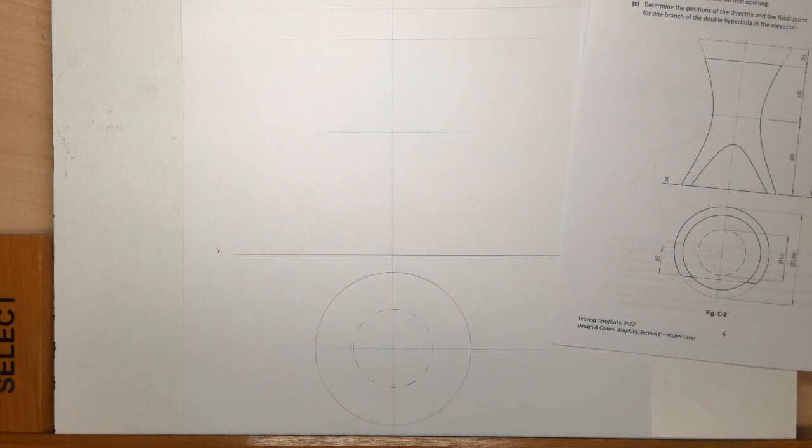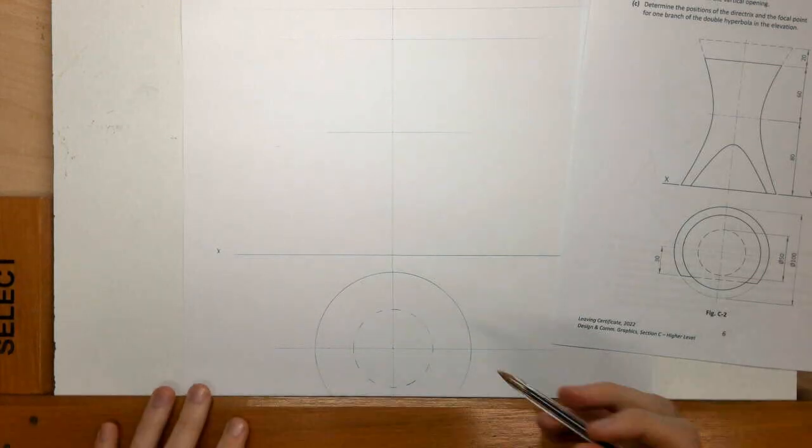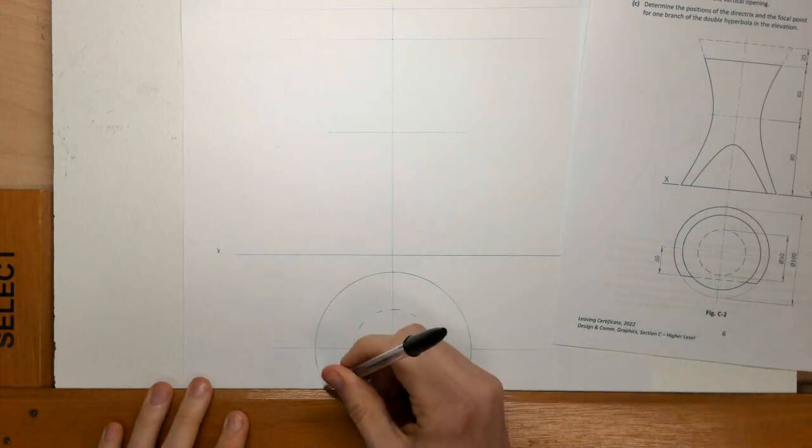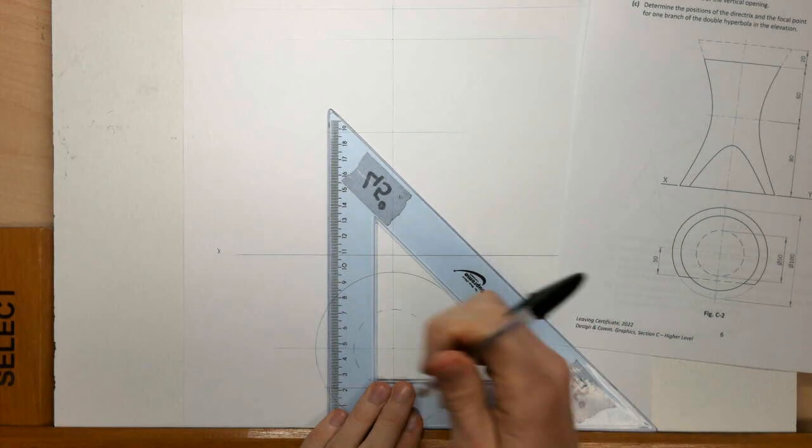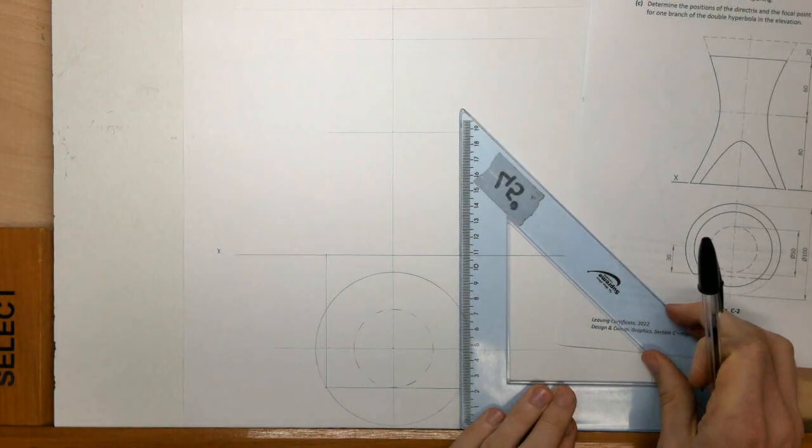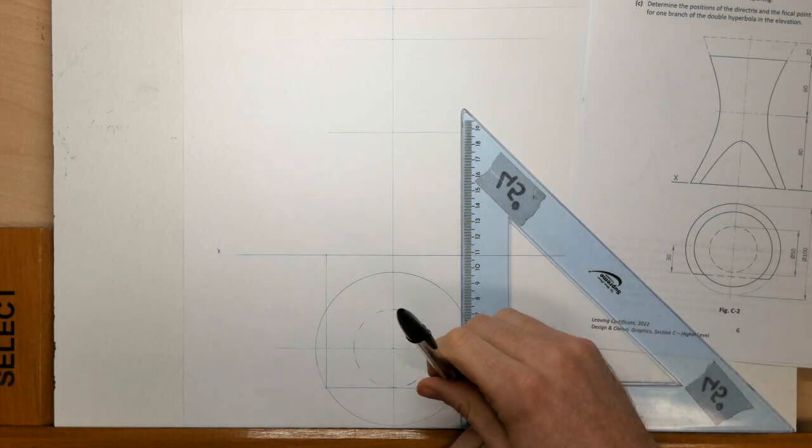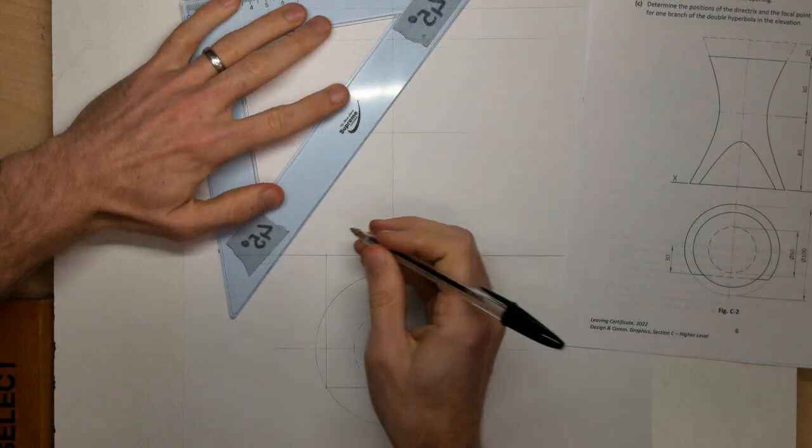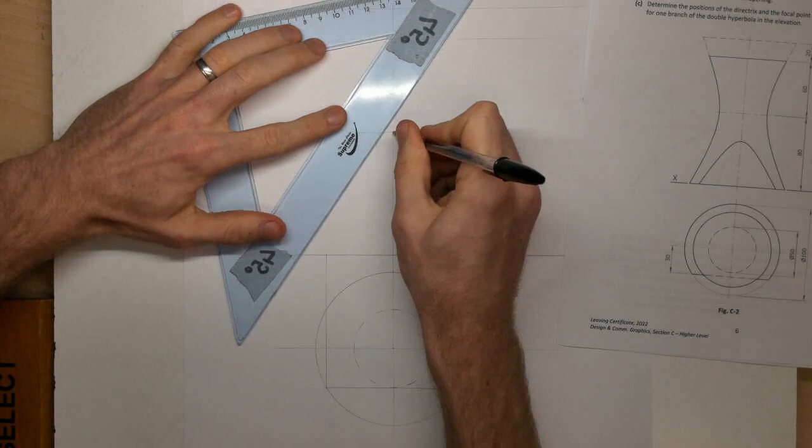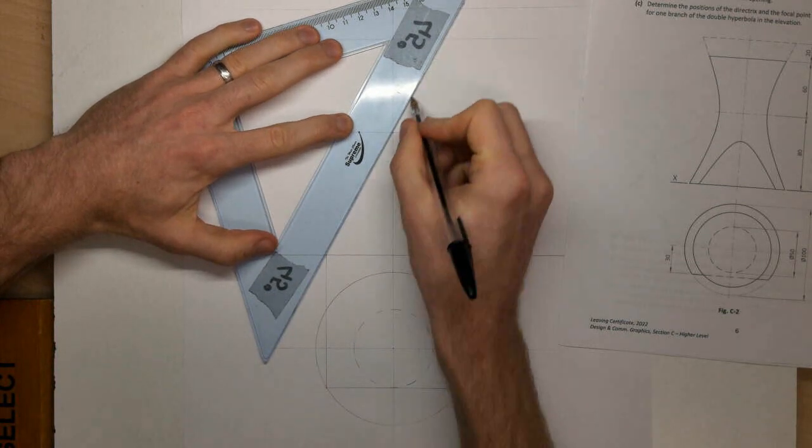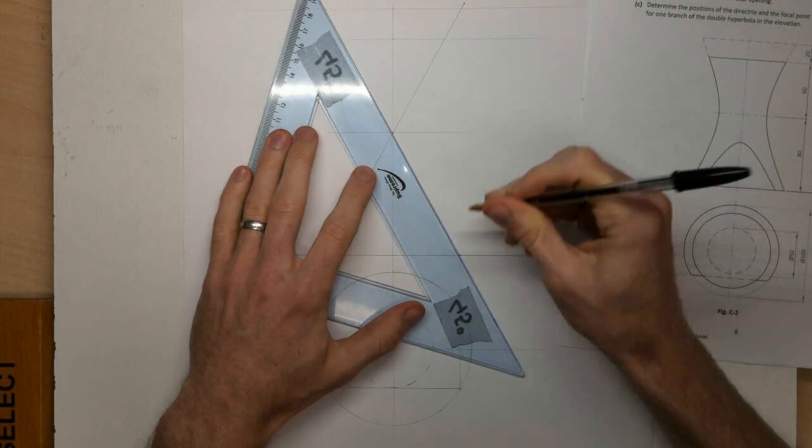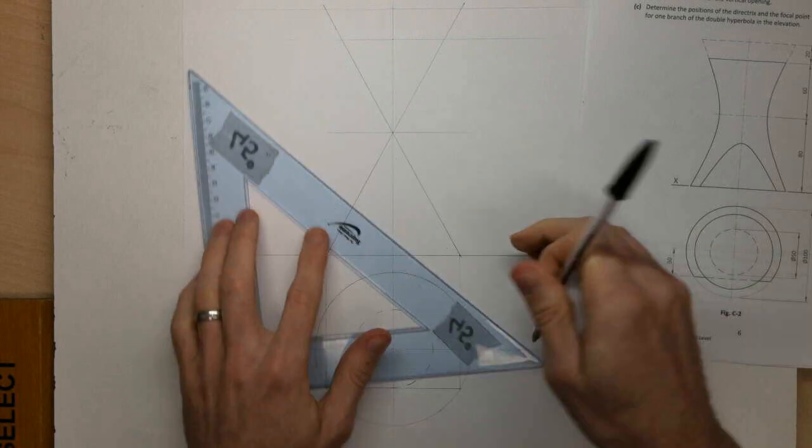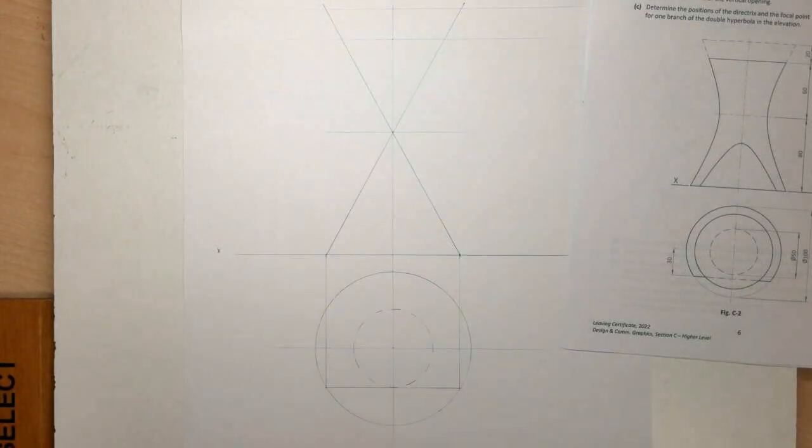Okay. So first off, I'm going to draw my asymptotes. Okay, asymptotes are always tangential to the throat circle incline, so that is the position of my asymptote, and let's project that up to my elevation, and they run through the center of the elevation.